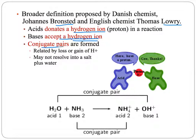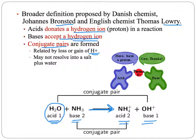As a result, you form conjugate pairs that are related by losing or gaining a hydrogen ion. This particular acid-base reaction of Bronsted-Lowry acids and bases may not resolve into a salt plus water like we see with Arrhenius reactions. For example, water combining with ammonia gives us an ammonium ion and a hydroxide ion, and the water serves as an acid when the reaction is going forward. But if we were going to make the reaction move in reverse, then the hydroxide ion that had come from the water would actually be accepting a hydrogen ion to go back to becoming H₂O.